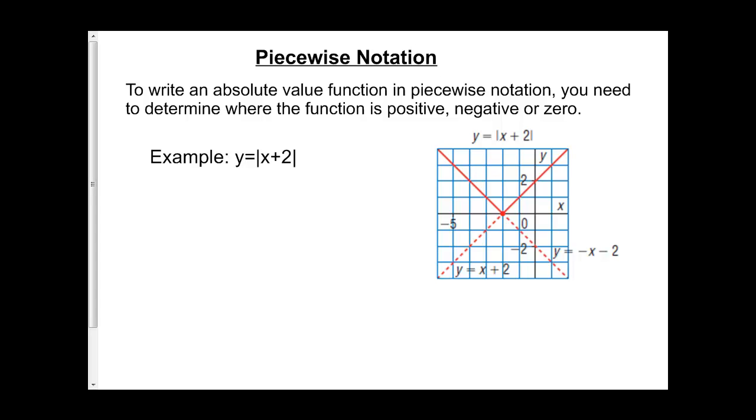One thing we can do with an absolute value function is write the function in piecewise notation. In piecewise notation, we're going to break up the function so we can decide where the function is positive and its normal function, and where we had to flip it, where it was the negative form of its normal function.